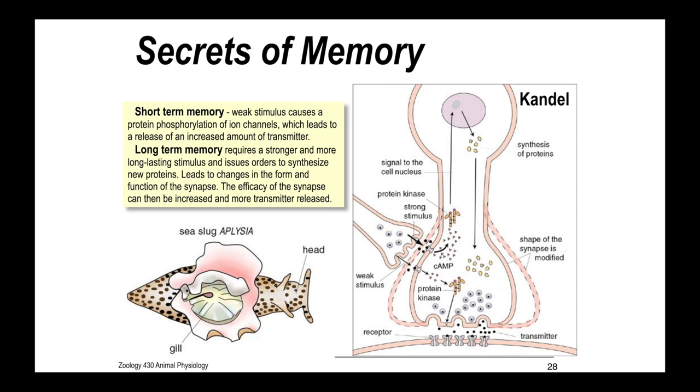That's for a short-term memory. A long-term memory requires stronger and more long-lasting stimulus, so more stimulus, and that leads to changes in the form and function of the synapse. The synapse has a cyclic AMP pathway, which then causes upregulation of this protein kinase, which sends a signal to the nucleus that synthesizes other proteins, which will then increase the shape of the synapse. So it's like a bigger, more powerful synapse that can then increase a lot more transmitter.